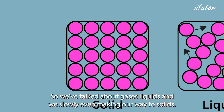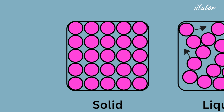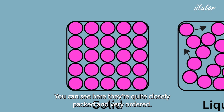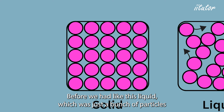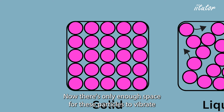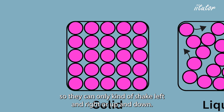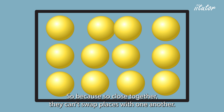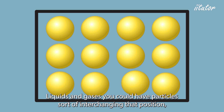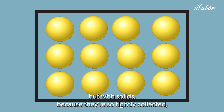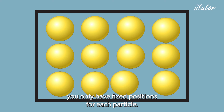Now, what about solids? The particles in a solid are very densely packed and ordered. Unlike a liquid's particles strewn loosely in a space, solid particles have an actual physical structure. There's only enough space for the particles to vibrate — they can only shake left and right or up and down. Because they're so close together, they can't swap places with one another, so each particle occupies only a fixed position.